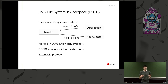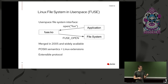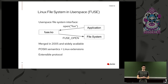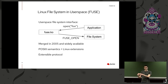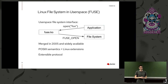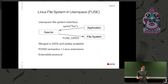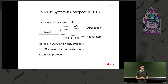Fuse is a user space file system interface. When a user space application accesses a file — say it wants to open 'foo' — it makes a system call, and the Fuse kernel module handles that call because it's responsible for that mounted file system. But instead of knowing what to do with it, it sends a Fuse open message to the file system server running as a user space process. It was merged in 2005, so it's very mature and widely available. Even if you haven't used it directly, you've probably used it — for example, when you connect your phone, the MTP protocol implementation is a Fuse file system.